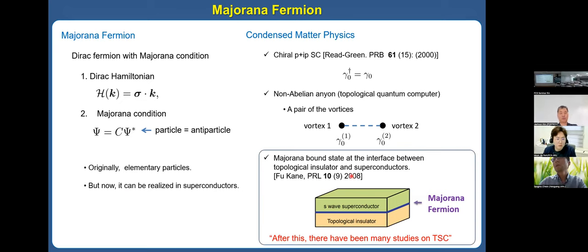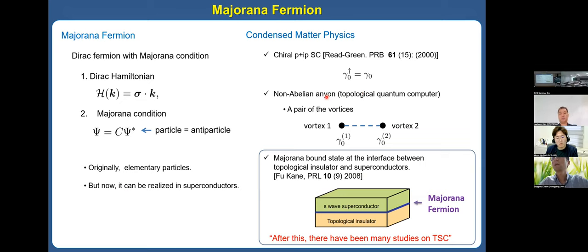For example, in 2008, Fu and Kane suggested that Majorana bound states can exist at the interface between a topological insulator and a superconductor. These Majorana fermions are known to satisfy non-Abelian anyonic statistics. It is known that they can be used as a basic platform for topological quantum computation.